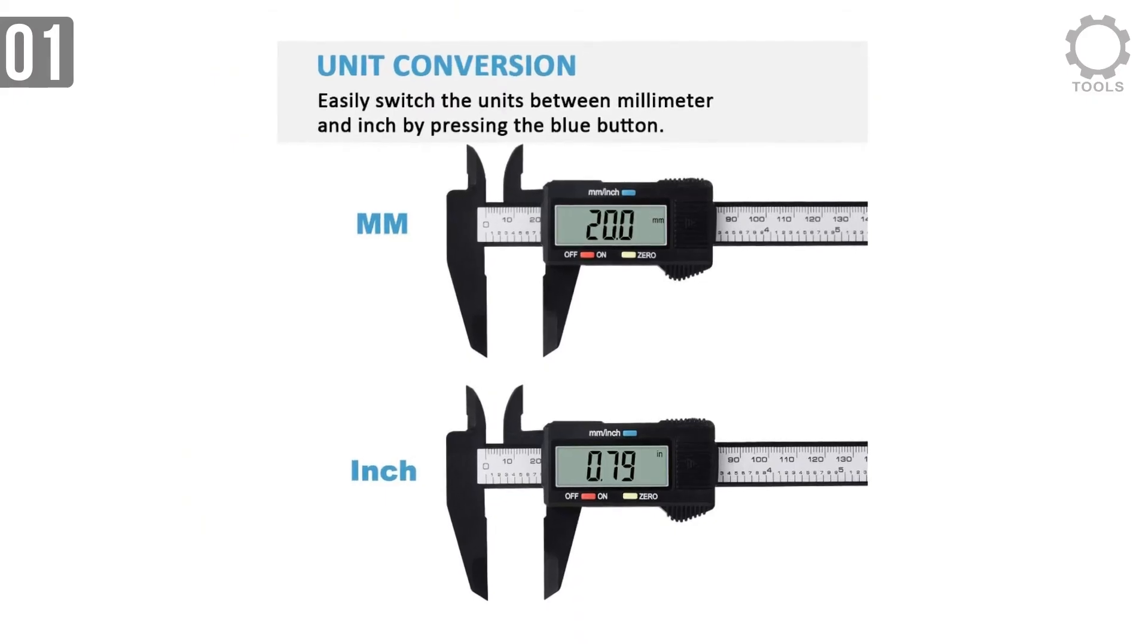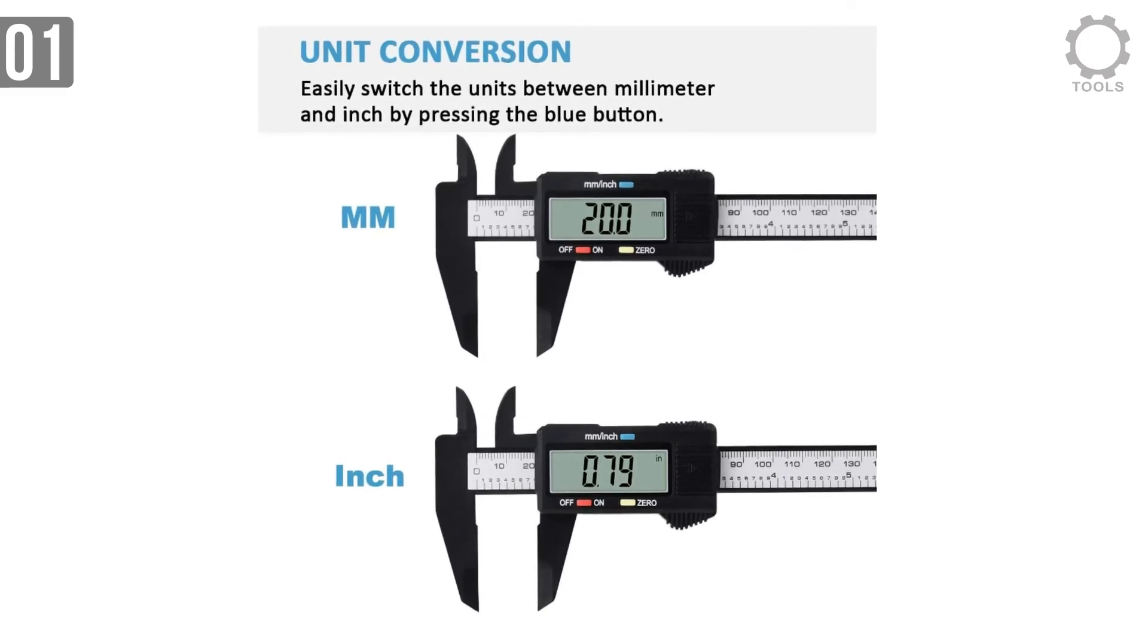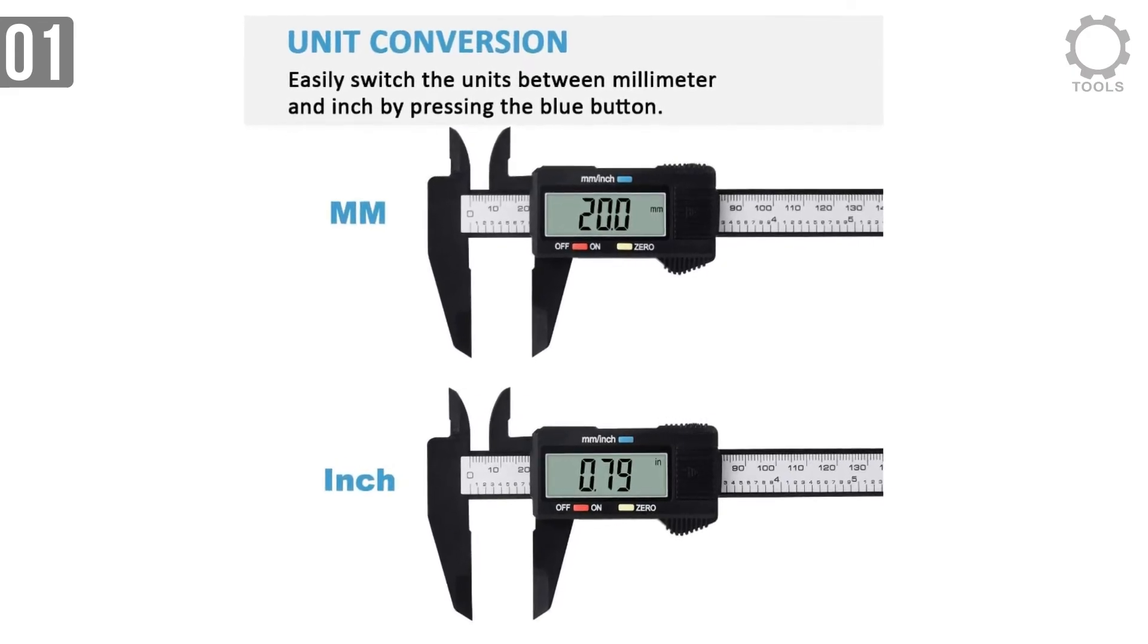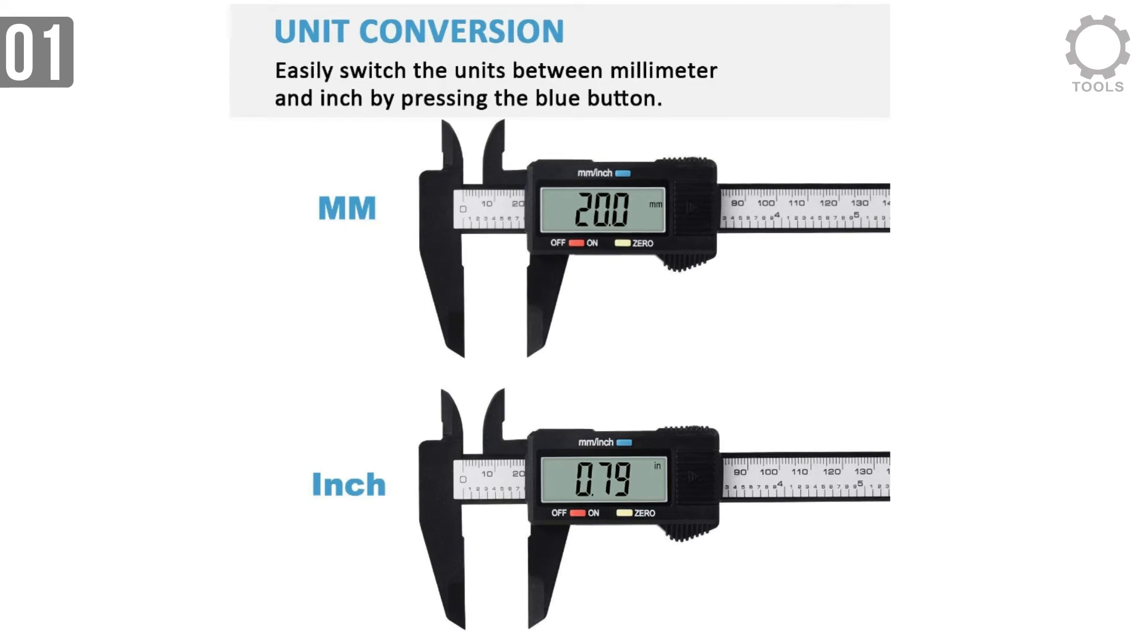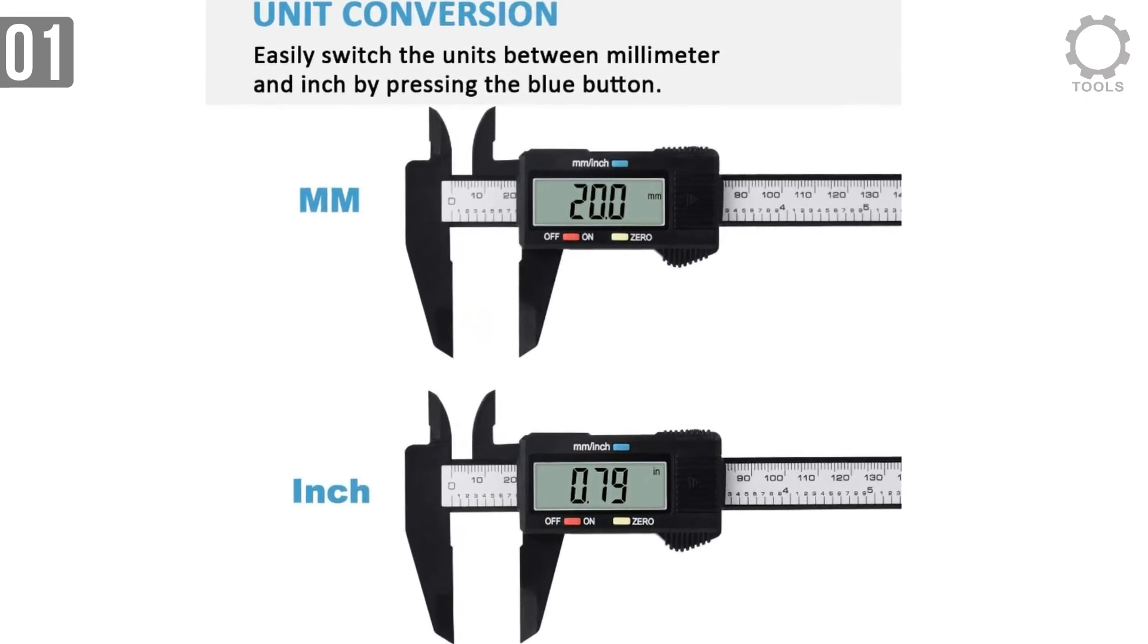A Durek Digital Caliper comes with three different units. It also features quick-change unit conversion. By pressing one button, you can convert between inch, mm, and fraction.